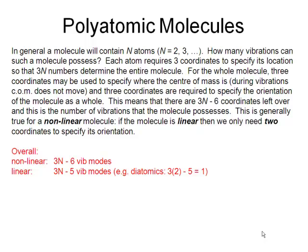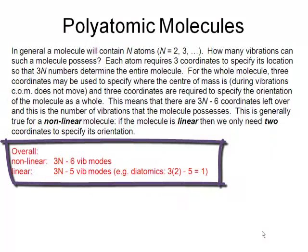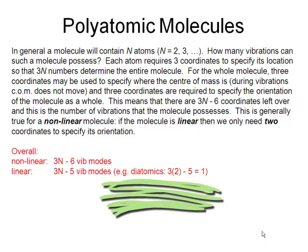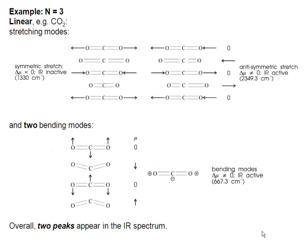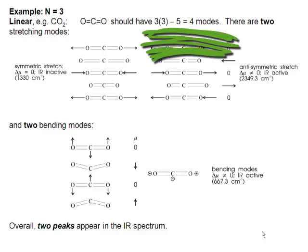There's a slight exception: that's true for non-linear molecules. For a linear molecule, there's an extra mode of vibration — 3N minus 5 vibrational modes for a linear molecule, and 3N minus 6 for a non-linear molecule. Diatomic molecules, for example, are necessarily linear. With N equal to 2, 3N minus 5 equals 1 mode. Here's an example for an N equals 3 molecule: CO2, which is a linear molecule. The number of modes is 3 times 3 minus 5, giving us four modes.